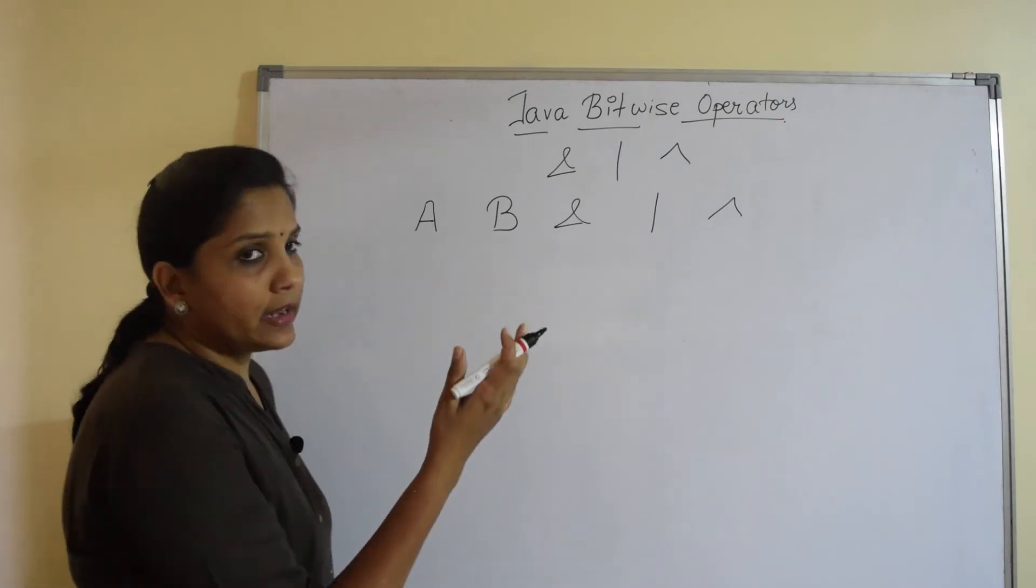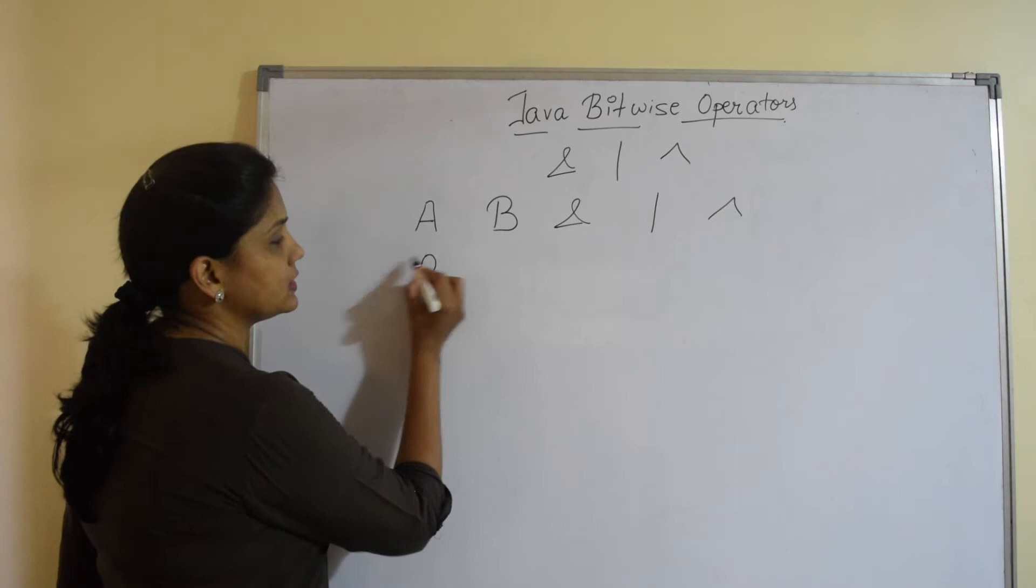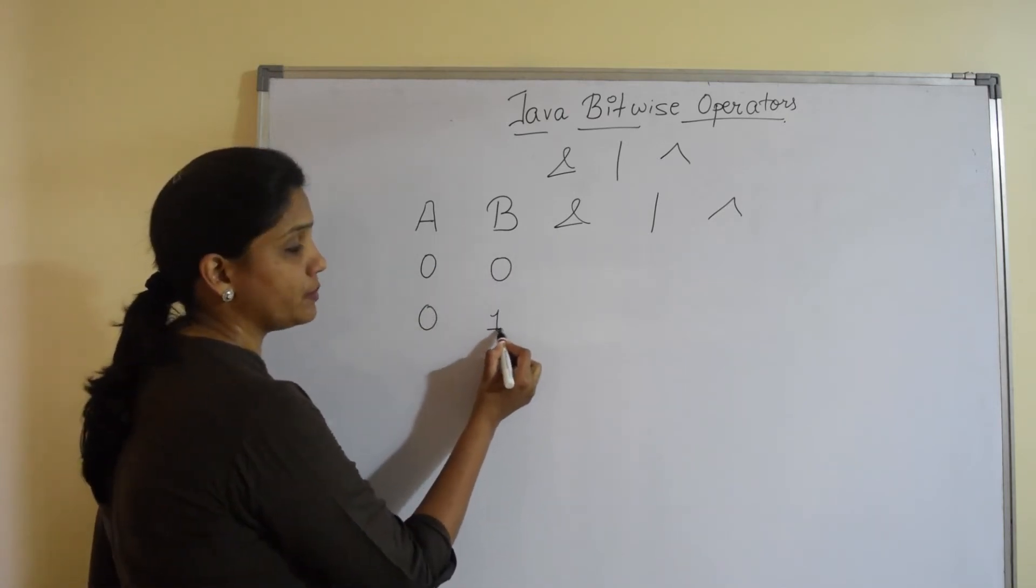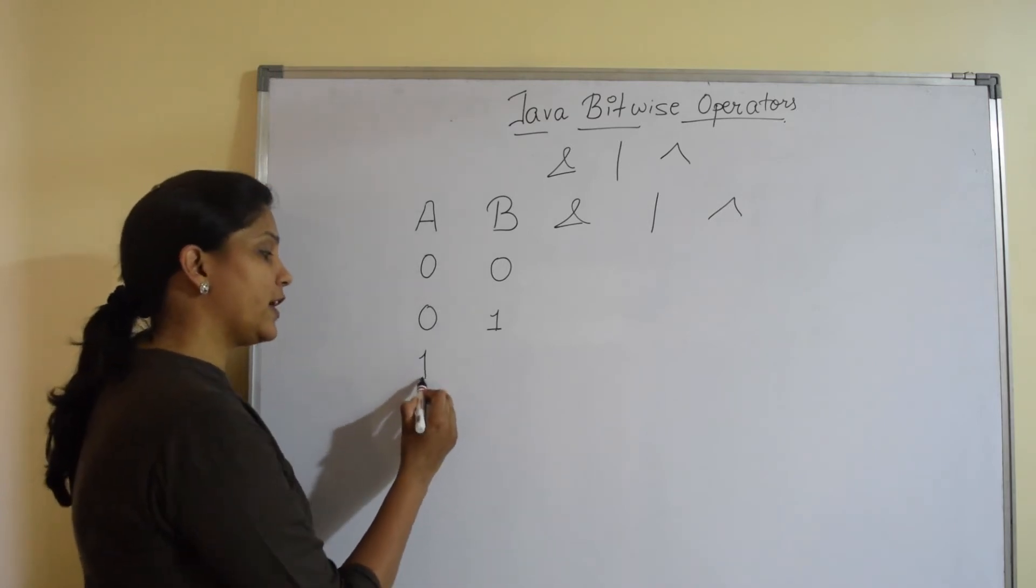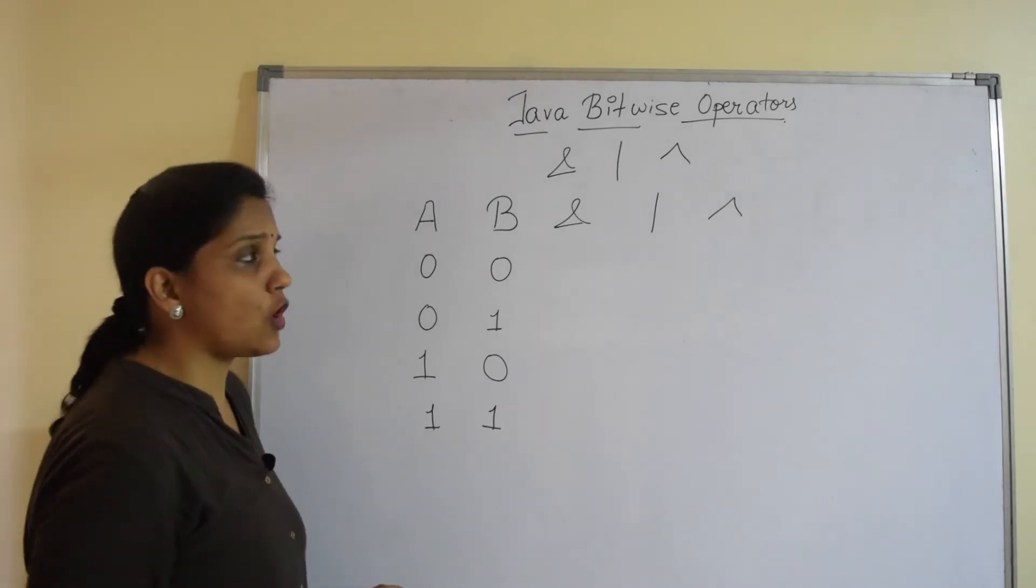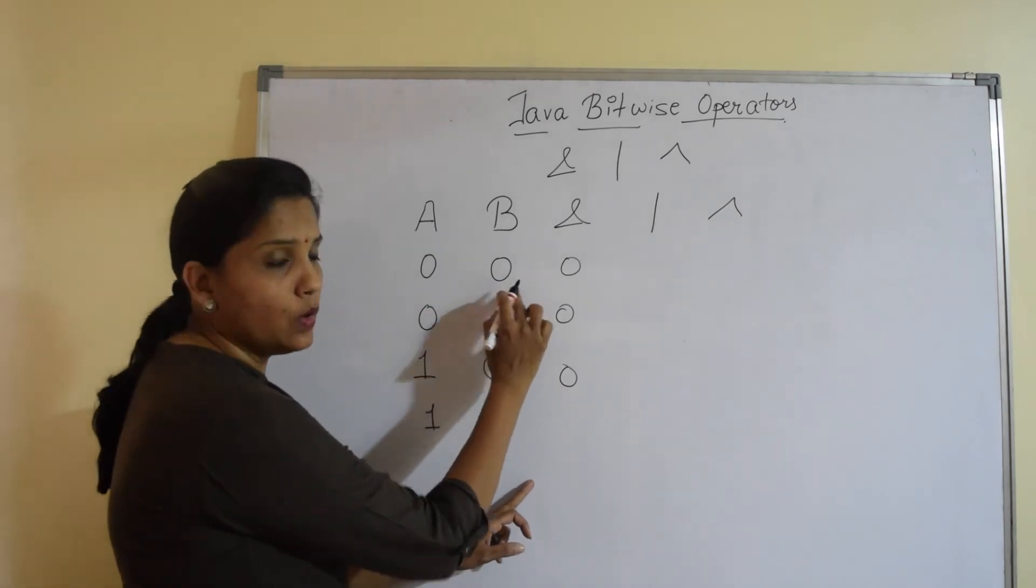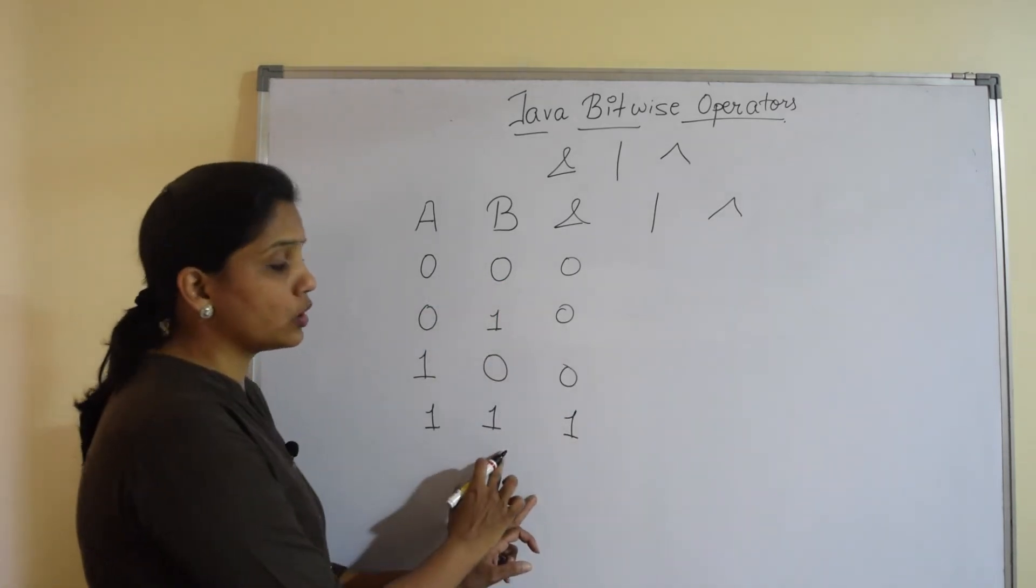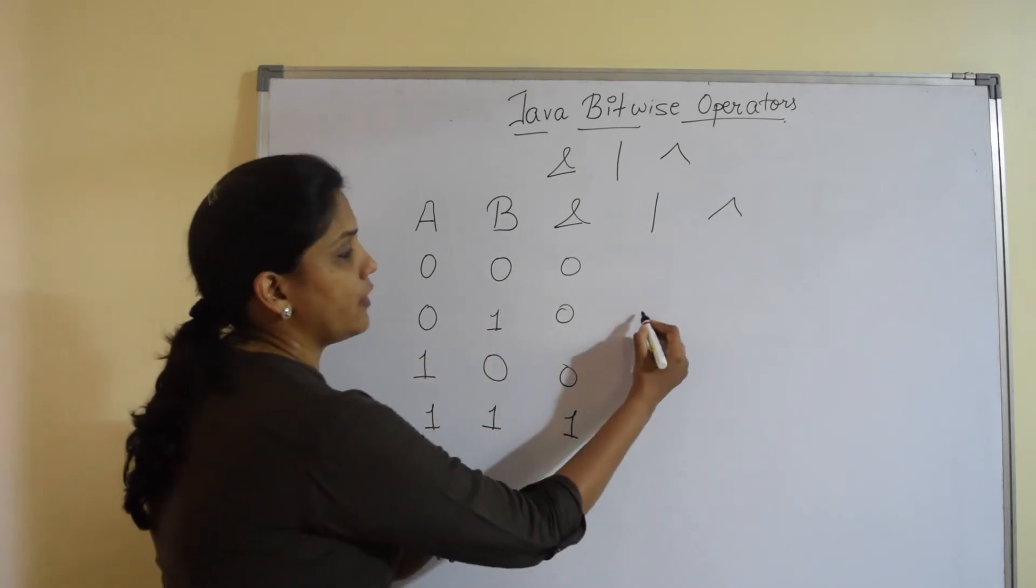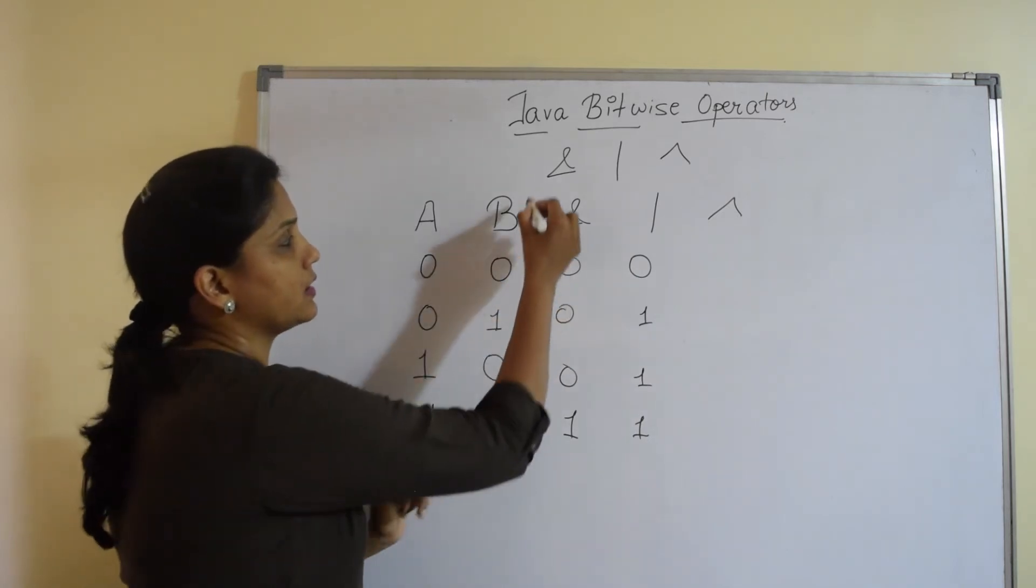Now binary is all about 0s and 1s. So I can say, when the value of A is 0 and the value of B is 0, value of A can be 0, value of B can be 1, value of A can be 1, B 0 and 1, 1. Now the same rules follow: AND is 0 if any 1 bit is 0 and it is 1 if both the bits are 1. OR is 1 if any of the bits are 1 and it is 0 if both the bits are 0.